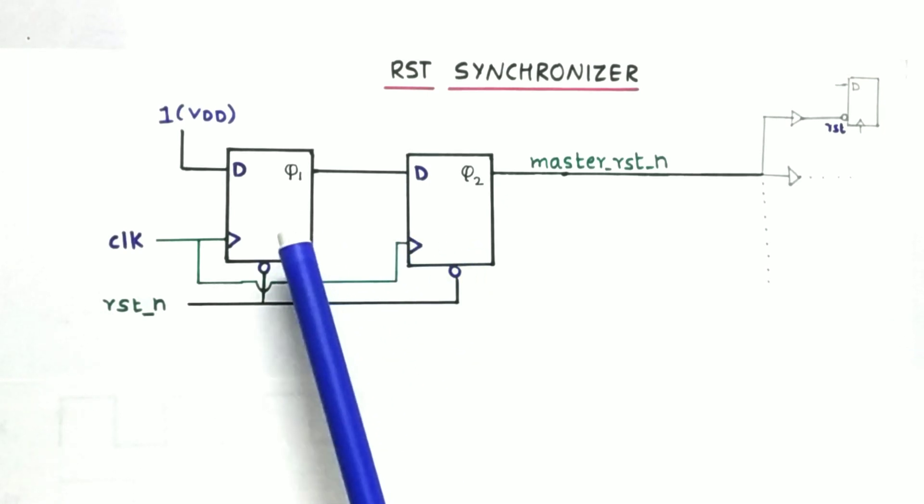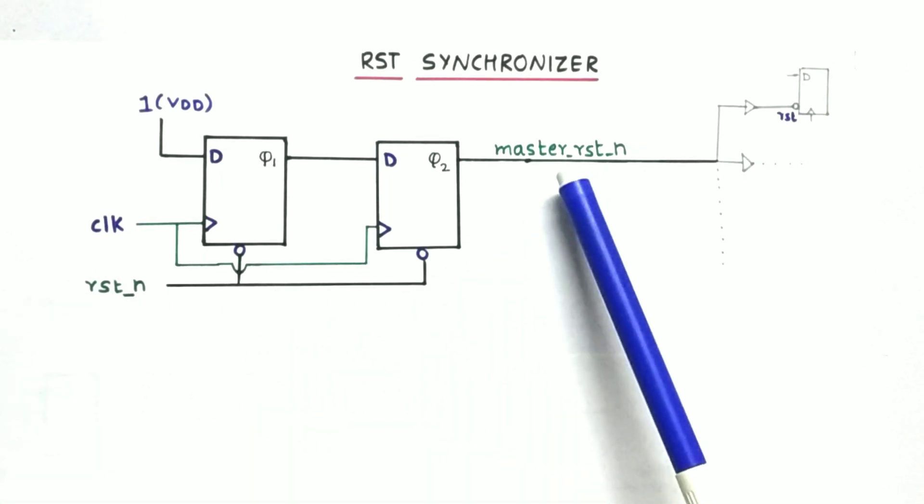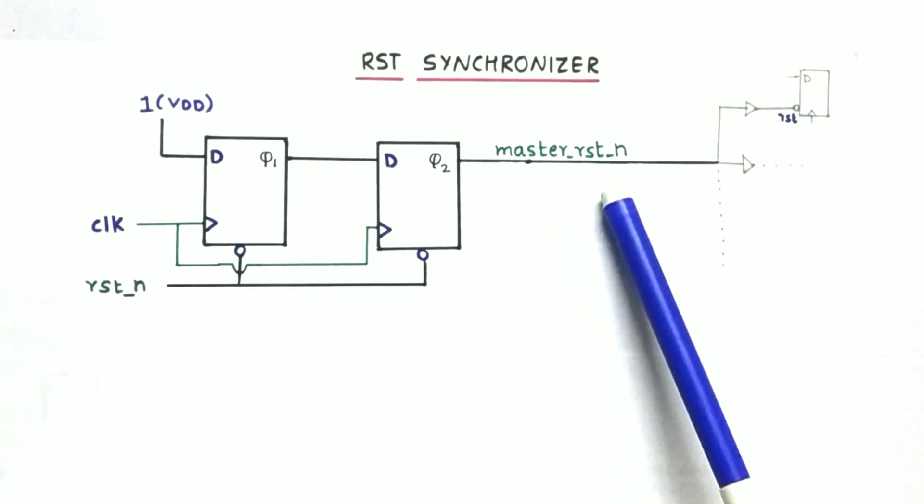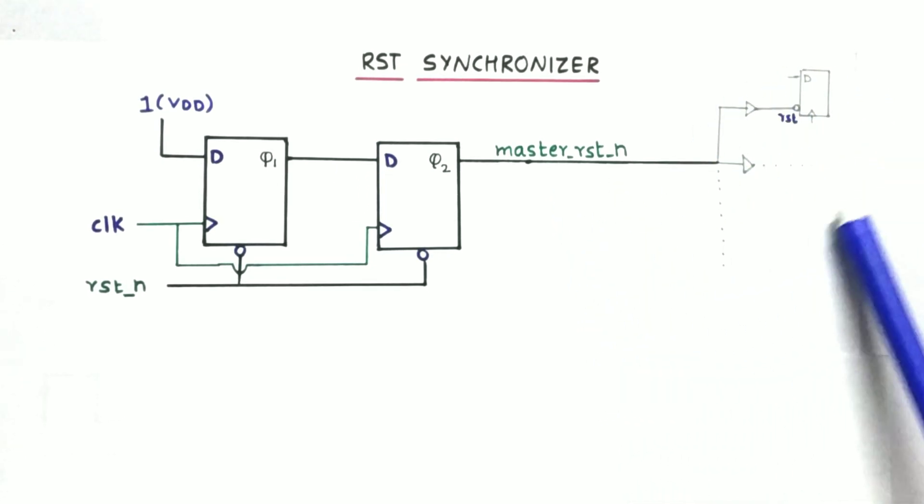The second gets the input from the output of first, and the first gets the input as always 1. And the reset_n is the input which we want to give to our original design, and that will be synchronized and being given as the master reset and passed to our entire design.